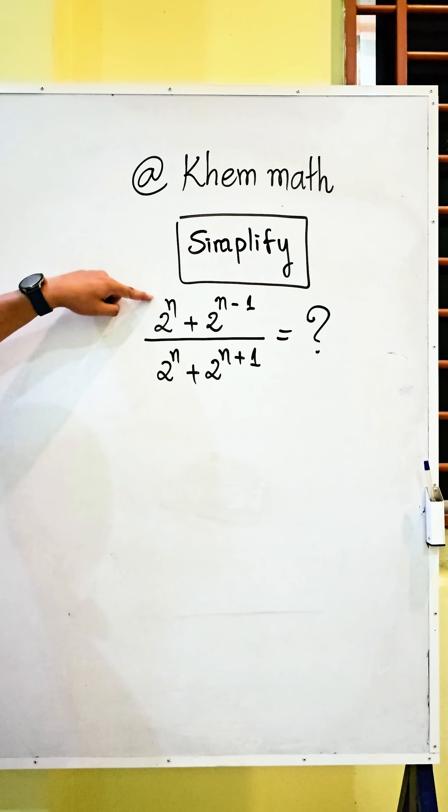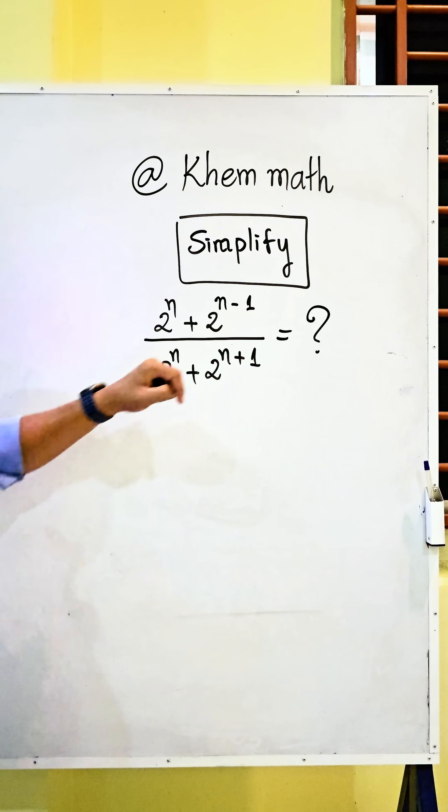Simplify 2 power n plus 2 power n minus 1 divided by 2 power n plus 2 power n plus 1. Here you see this exponent n minus 1 and here n.